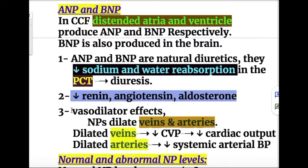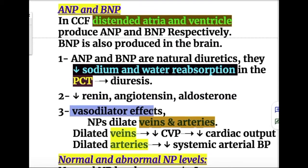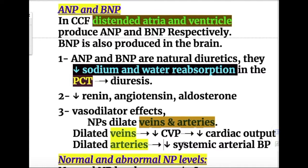ANP and BNP are vasodilators. They dilate veins, decreasing central venous pressure and cardiac output. They also dilate arteries, decreasing systemic arterial blood pressure. So in cases of CCF, ANP and BNP prevent edema formation, acting as natural diuretics.